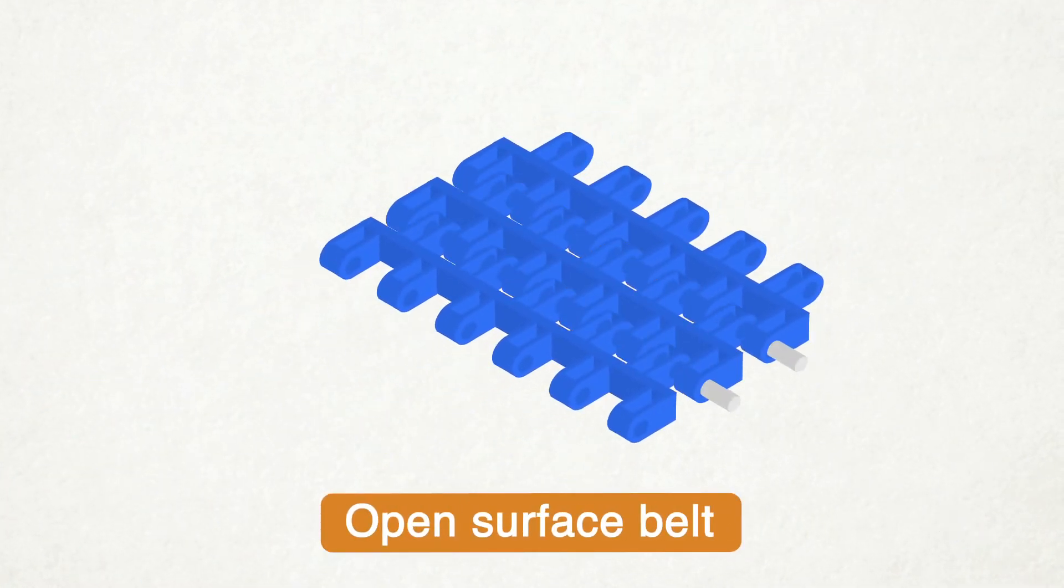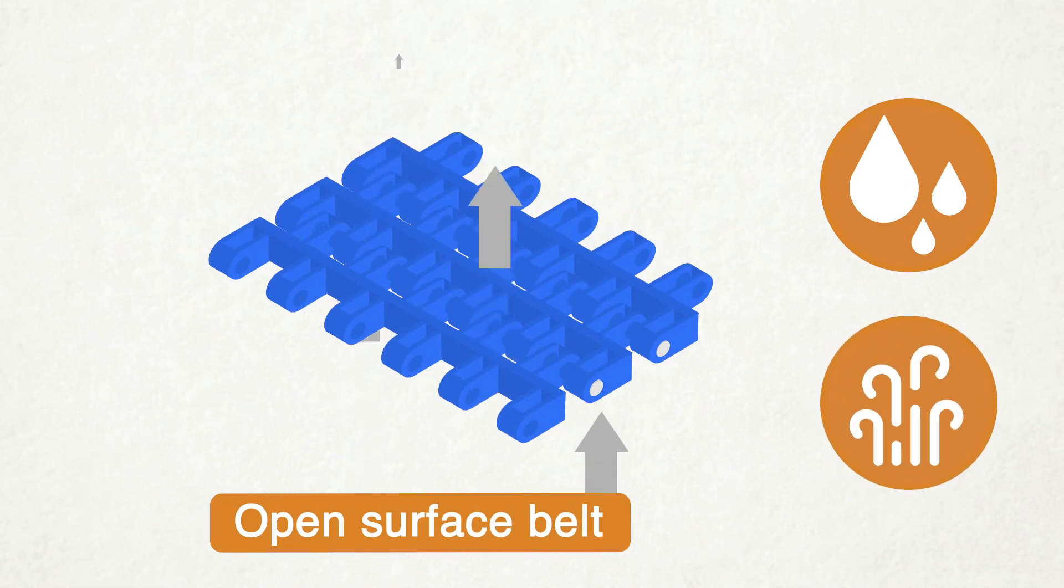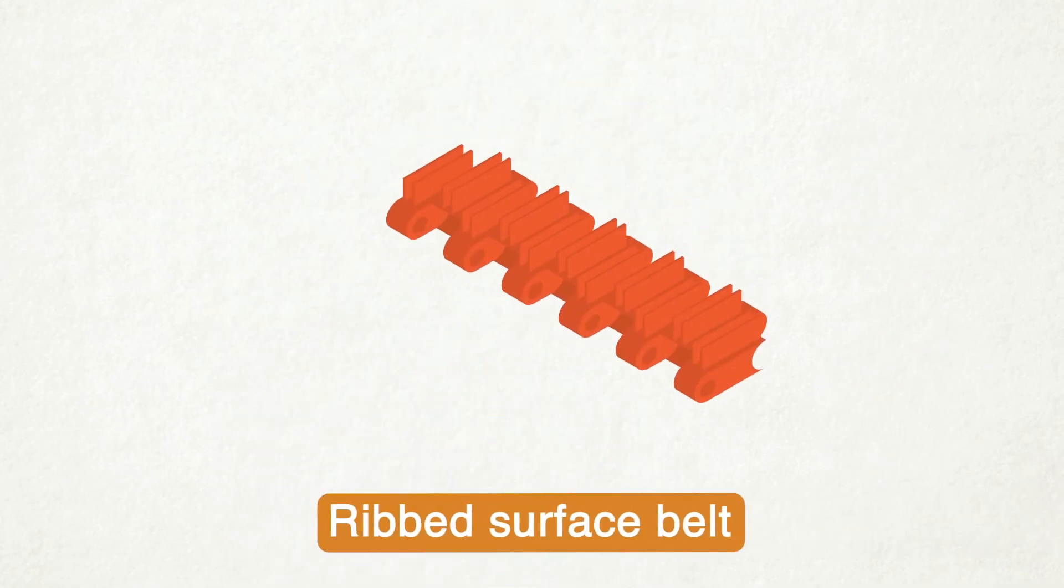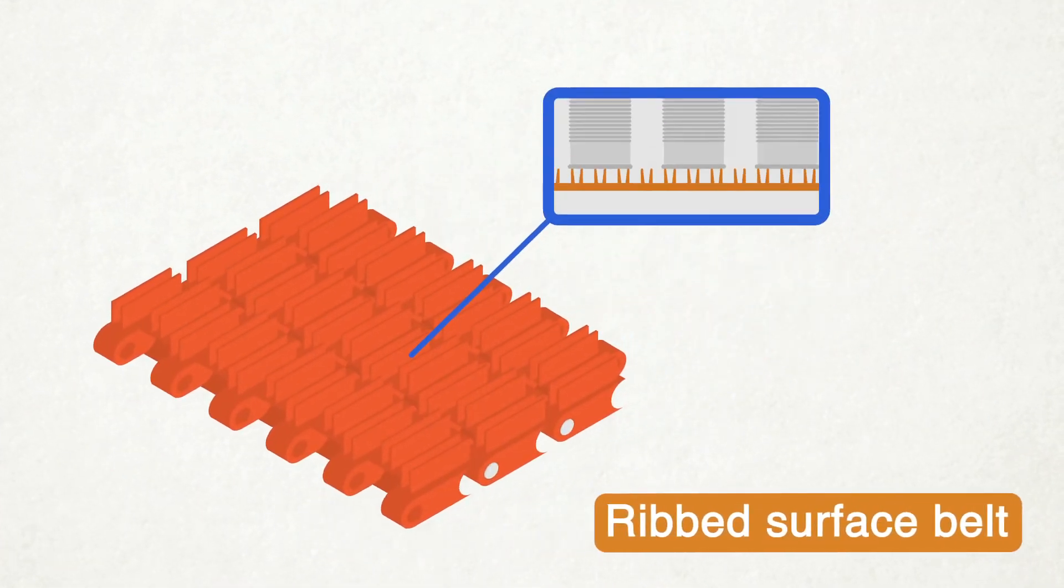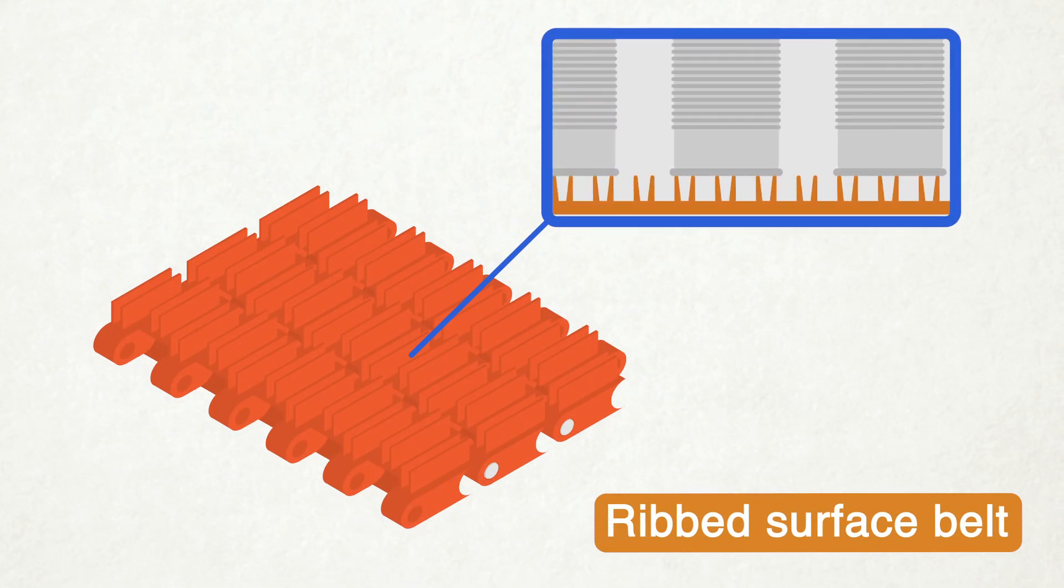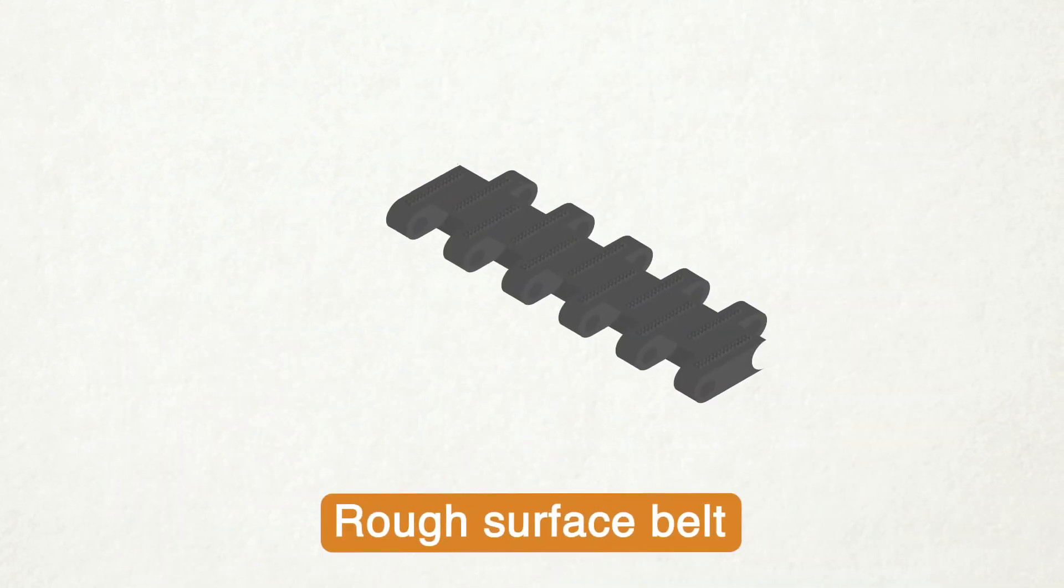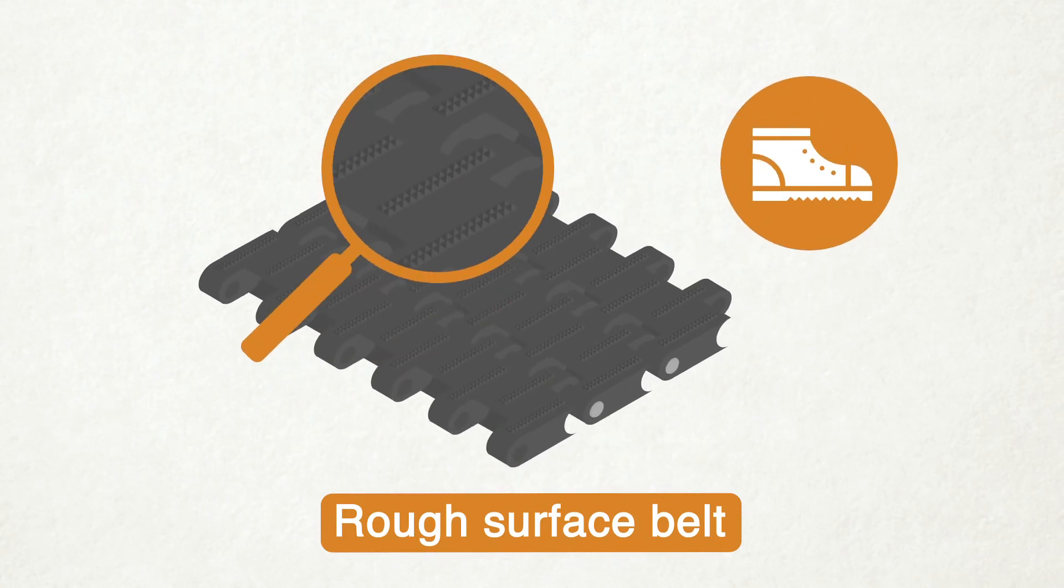Open surfaces can be useful when water drainage or airflow is needed. A ribbed surface gives minimum product contact and a lower coefficient of friction. Rough top surfaces reduce slippage of products and allow employees to move about safely on the surface.